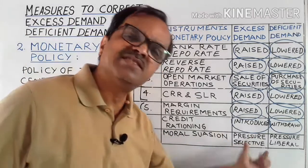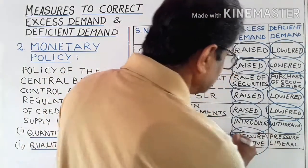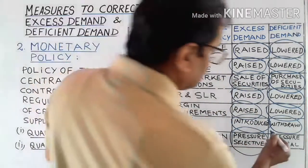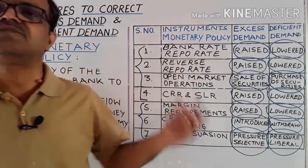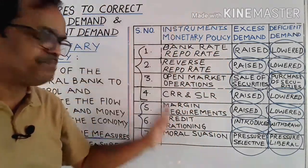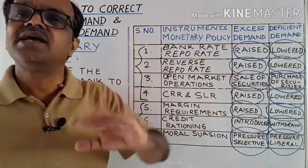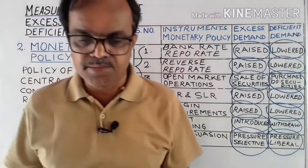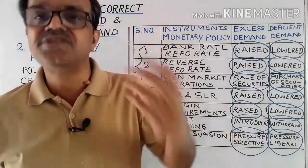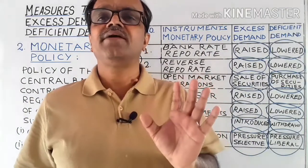The last instrument is moral suasion — pressure exerted on commercial banks during excess demand to be selective and restrictive in granting loans. During deficient demand, a liberal policy is applied in the advancement of loans. These are the monetary policy instruments to control excess demand and deficient demand. That's all about the policy measures for correcting these situations. See you again with a new topic in the next video. Keep learning and keep watching.